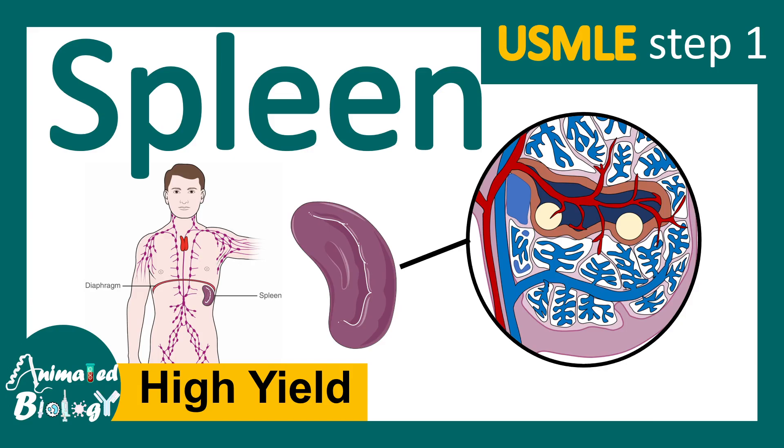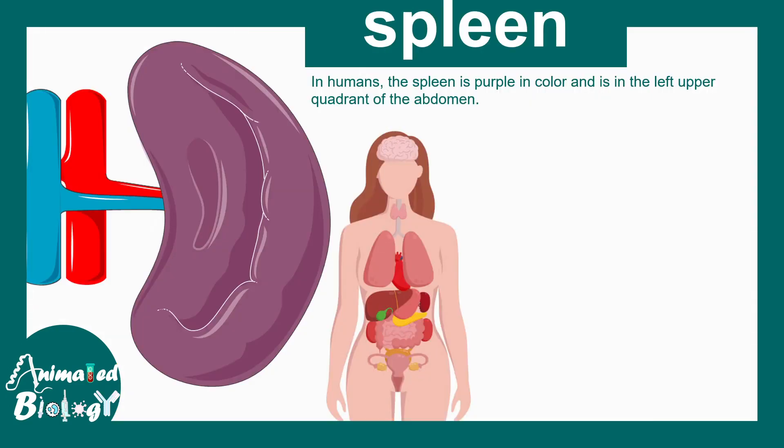In this video we'll talk about the spleen. In humans, the spleen is a purple colored organ present in the left upper quadrant of the abdomen. The spleen is the secondary lymphoid organ in the body and it's the largest secondary lymphoid organ.